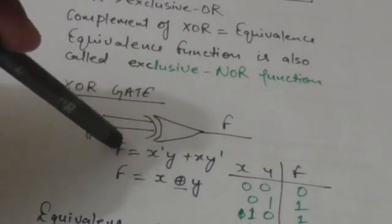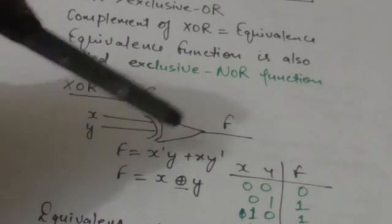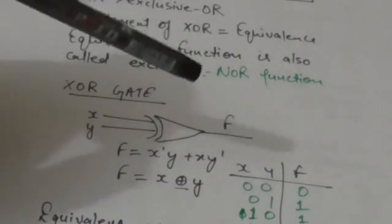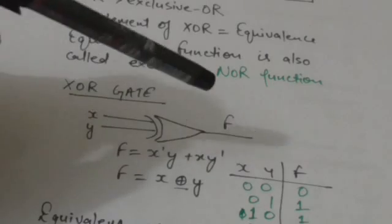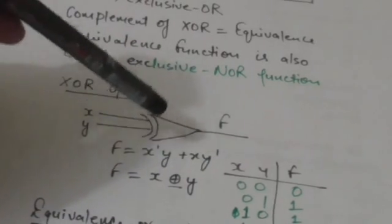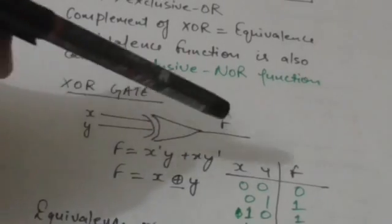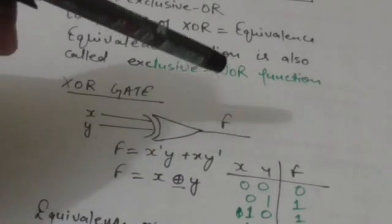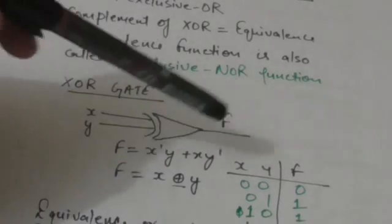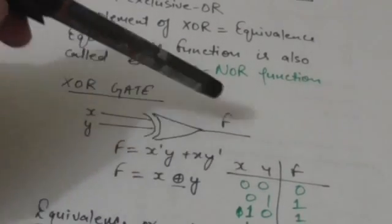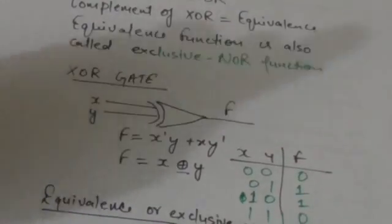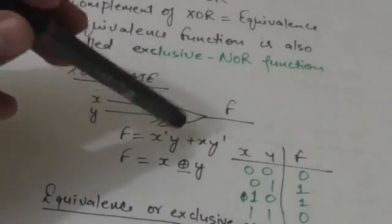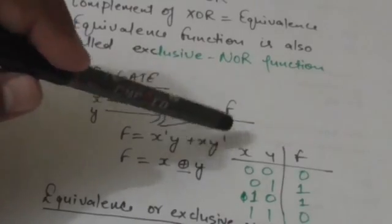The XOR function F equals X'Y + XY'. The value of the function would be 1 if either term equals 1. X'Y equals 1 when X equals 0 and Y equals 1, and XY' equals 1 when X equals 1 and Y equals 0. So the function equals 1 only when X and Y have different values.